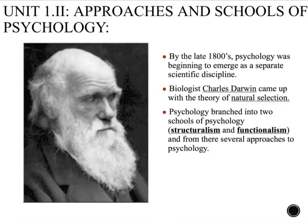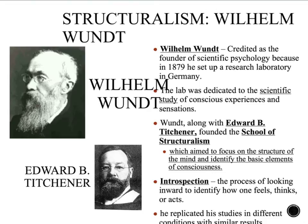While Darwin did not focus on humans — instead focusing on birds and other species — other scientists would come along later to begin the scientific study of the human brain, how it is developed and how it functions. This initially led to two separate schools in the genesis of psychology: structuralism and functionalism.